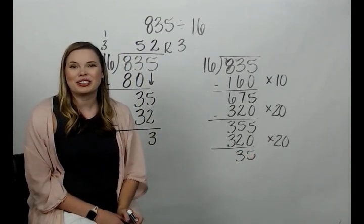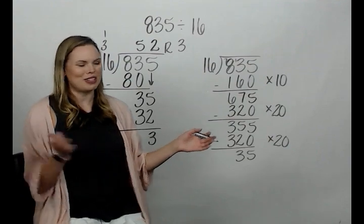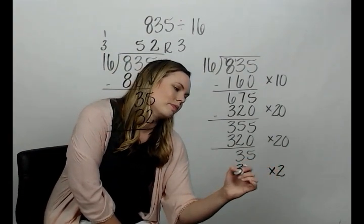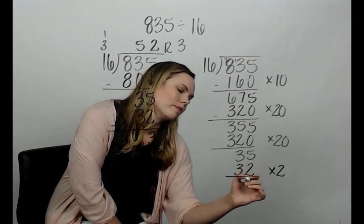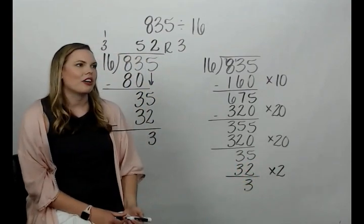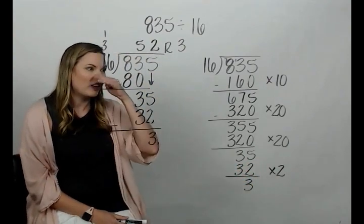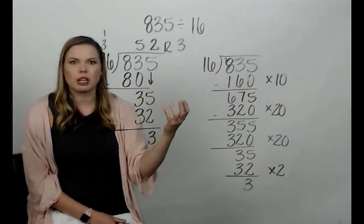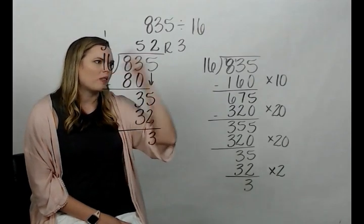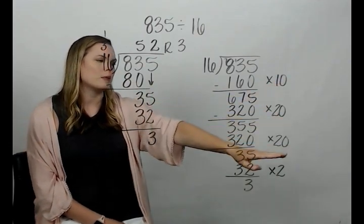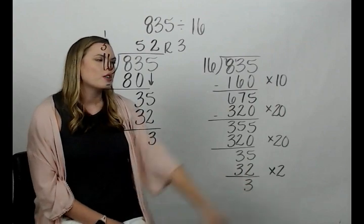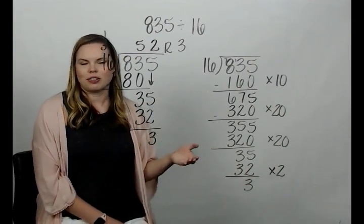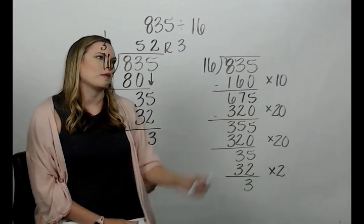And now we're at 35. Well, how many times will 16 go into 35? Well, I know 16 times two, it's 32. And there's my remainder of three. It is no longer going. And so what do I do with this is, this is written down to see what your multiplication was so that at the end you can say, okay, it went 10 times plus 20 times plus 20 times plus two times. So it went in 52 times. 16 went into this value 52 times with a remainder of three.